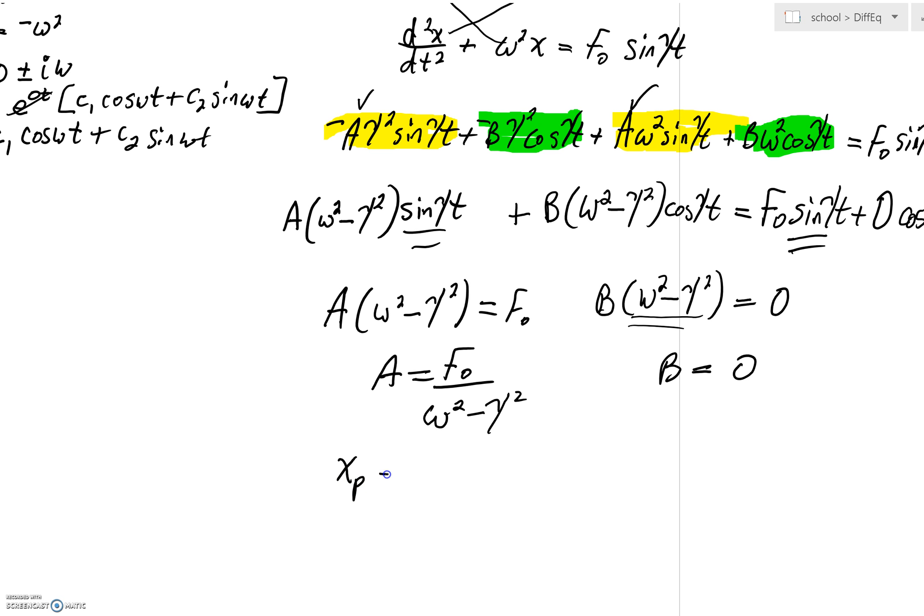x_p was assumed to be A·sin(γt) plus B·cos(γt). So we can say that x_p is going to be our A, that's what we just found for A,